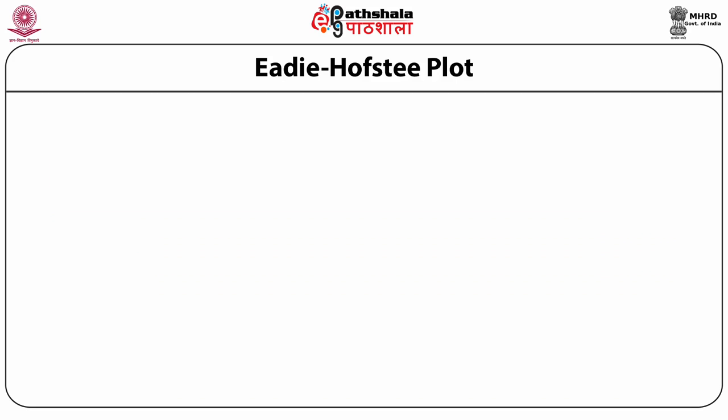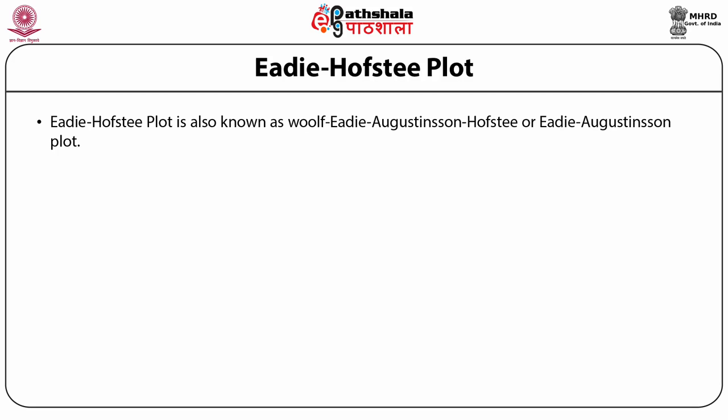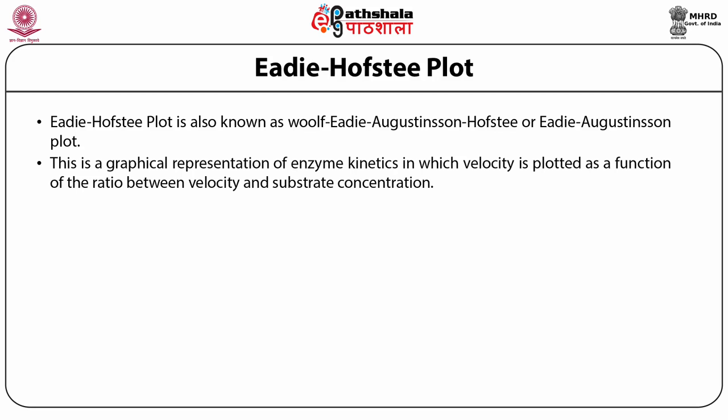As can be seen from the Lineweaver-Burk plot, the main problem is the use of reciprocal values. To solve this problem, a few other plots have been developed. One such plot is the Eadie-Hofstee plot, also known as the Woolf-Eadie-Augustinsson-Hofstee plot or Eadie-Augustinsson plot. The Eadie-Hofstee plot is a graphical representation of enzyme kinetics where velocity is plotted as a function of the ratio between velocity and substrate concentration. Similar to the Lineweaver-Burk plot, the Eadie-Hofstee plot can also be derived from the Michaelis-Menten equation.